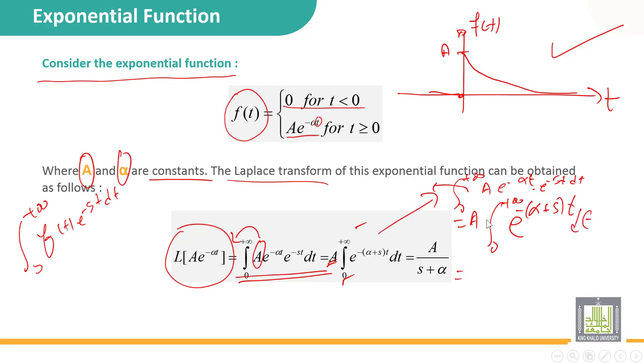The integral of this function is simply: first A, then one over -(α+s) multiplied by the same function e^(-(α+s)t), and we calculate it between zero and plus infinity. I can get this result.